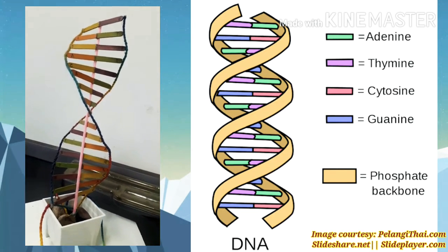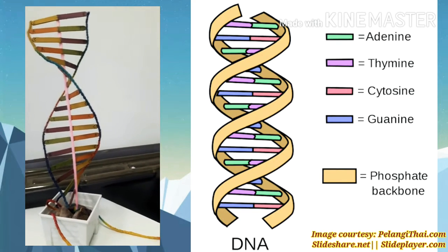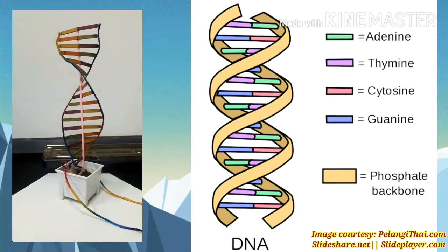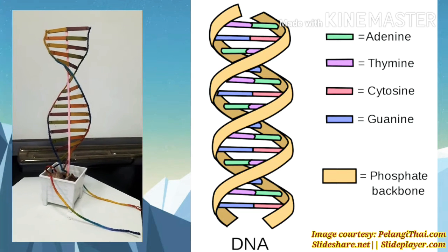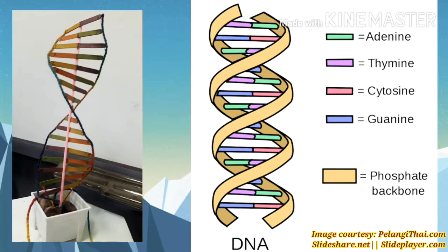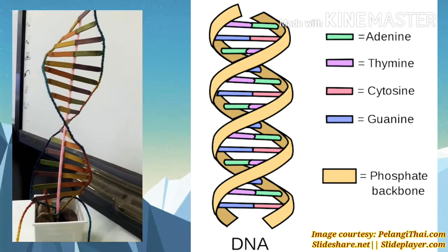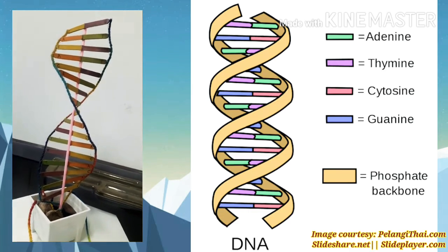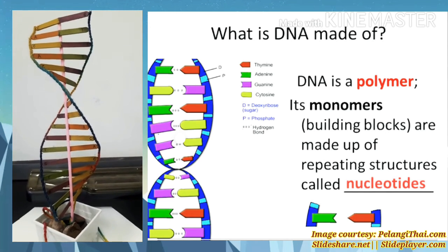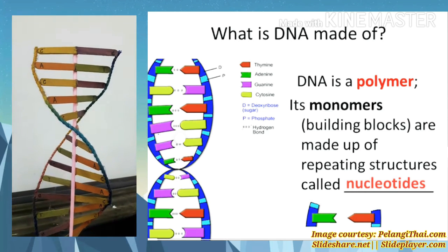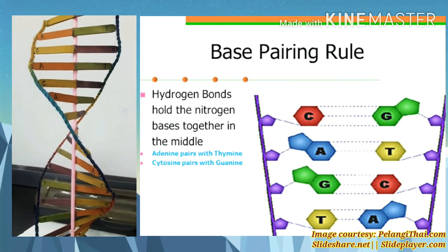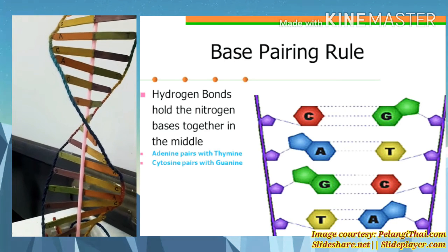A stands for adenine, T stands for thymine, C stands for cytosine, and G stands for guanine. These are the four letters that we call bases — the bases of DNA, or deoxyribonucleic acid. These four molecules are called nitrogenous bases, and they are part of larger molecules called nucleotides that form the basic building blocks of DNA. The letters of the alphabet are really just abbreviations or acronyms of those nitrogenous bases.